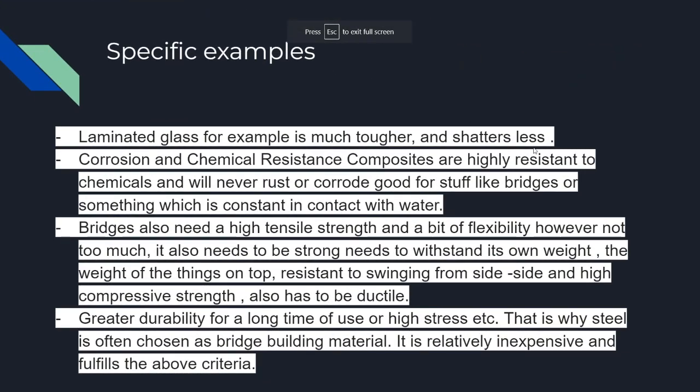Some examples of composites: one very famous one is laminated glass — it sticks together much more and shatters less. There are also corrosion and chemical resistance composites that never rust, which are good for structures like bridges that come in contact with water and air. Bridges need high tensile strength, a bit of flexibility, and must be strong enough to withstand their own weight and the weight of people, cars, and traffic for 30 to 50 years. That is why steel is often chosen for bridge materials — it is relatively inexpensive and fulfills these criteria.